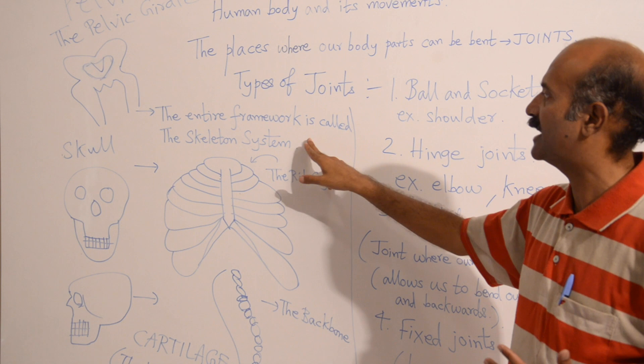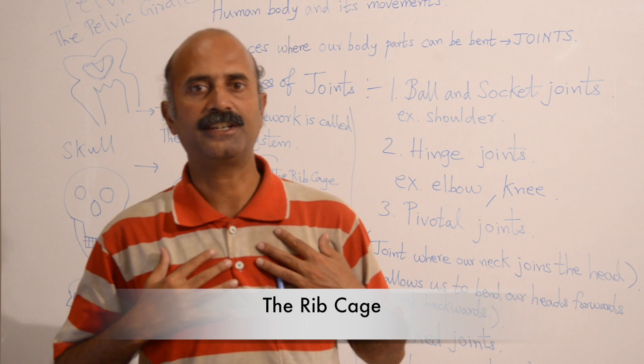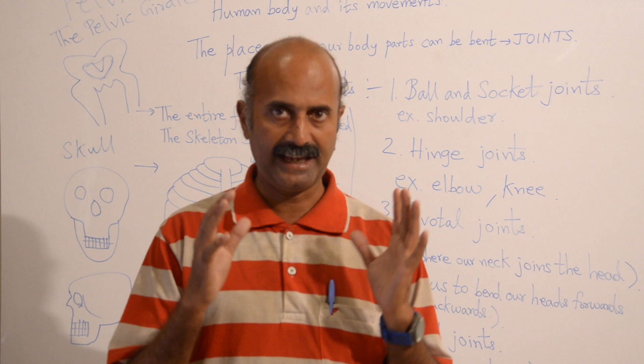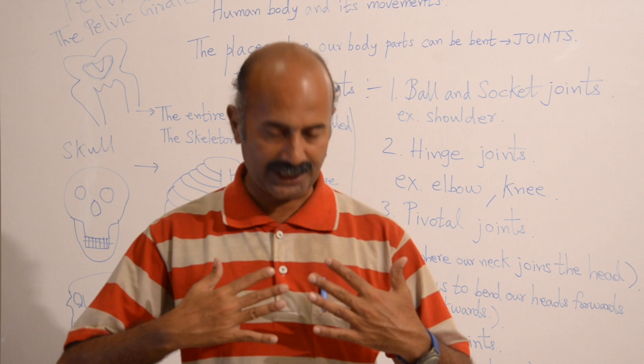Now we discuss the rib cage. All our vital organs like the heart and lungs are very vital for our survival and have to be protected from birth till death. That is why they are known as vital organs, and that is why we have something known as a rib cage.